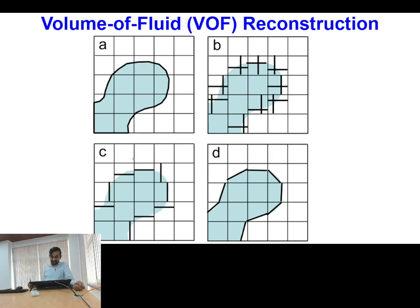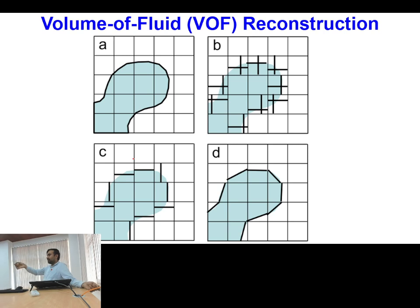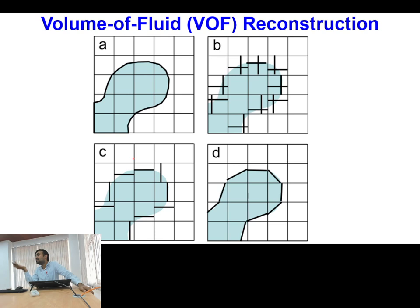How is this scheme extended to multi-dimensional problems? For single dimension it is perfectly fine because the interface is always either parallel to horizontal or parallel to vertical. But in two-dimensional flow conditions the interface can be at any arbitrary orientation, which creates difficulty because there we will find some error.